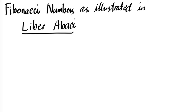Hi there, everybody. We're now on our course and playlist in Mathematics in the Modern World. We're still in module one, which is the nature of mathematics. And we're going to talk about the Fibonacci numbers, as was illustrated in the Liber Abaci — or some pronounce it as Liber Abaci.